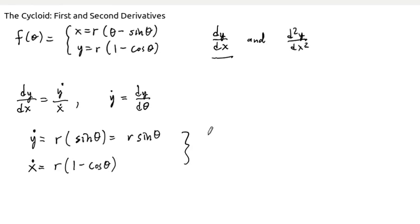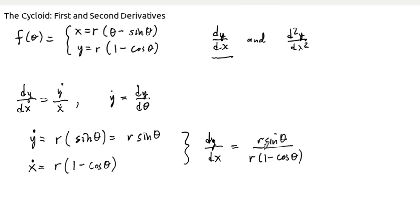Putting this all together, the slope of the tangent line at each point on the cycloid, dy/dx, is given by r sine of theta divided by r times 1 minus cosine of theta. We notice there's an r in both the numerator and denominator that can be canceled out. So our derivative dy/dx is just sine of theta divided by 1 minus cosine of theta.